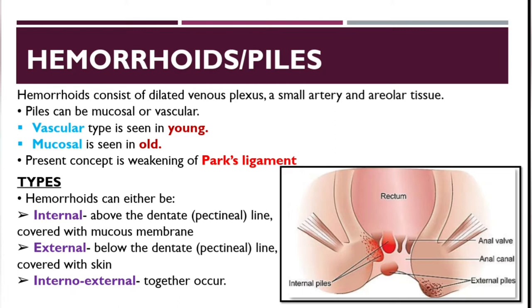Internal-external hemorrhoids are a combination of both internal and external components — internal piles above and external piles below the dentate line occurring together.